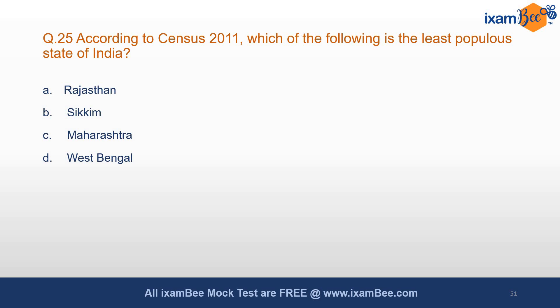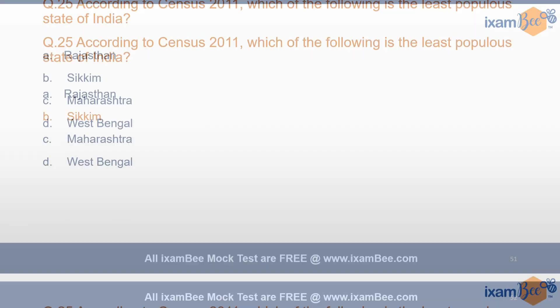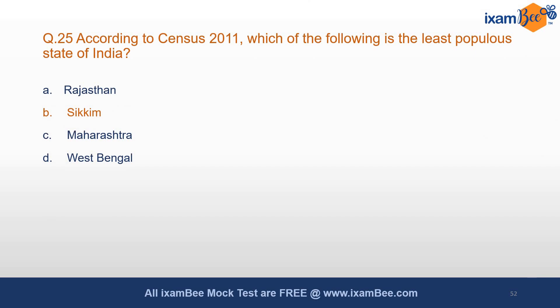According to Census 2011, which is the least populous state of India? The answer is Sikkim. Census data — you can expect questions. The least populous state is Sikkim and the most populous state is Uttar Pradesh. You can take hints from previous year's papers and use them in your preparation; it surely helps.